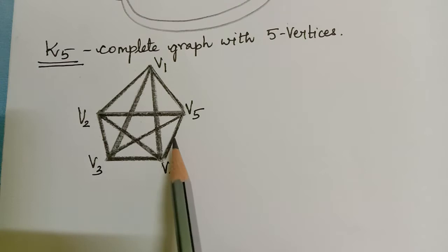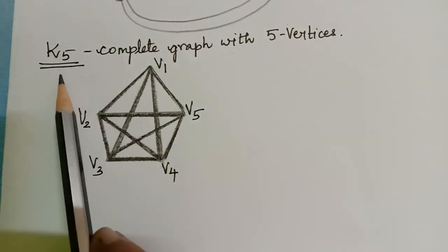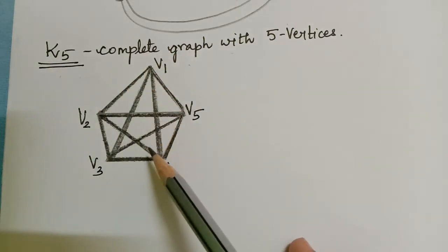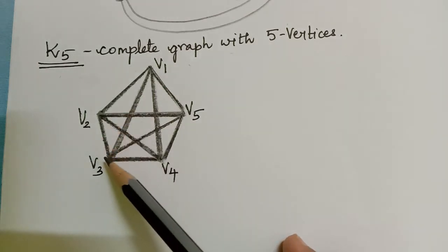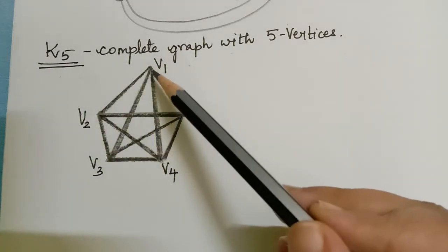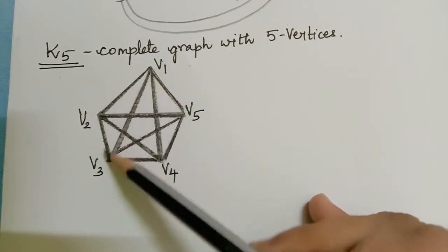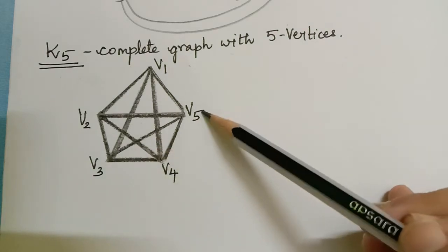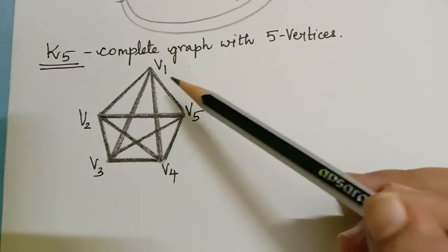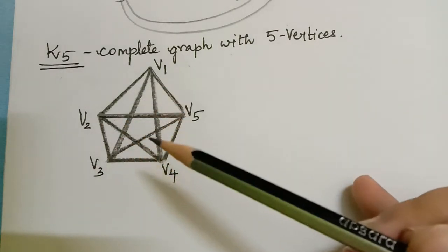Next we shall consider the example of a complete graph with five vertices, that is K5. A complete graph is the one in which every pair of vertices will have an edge between them. For example V1 has an edge to V2, V3, V4 and V5. Like that, for any pair of vertices there will be an edge between those vertices.